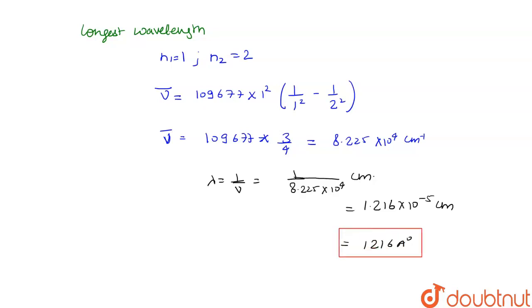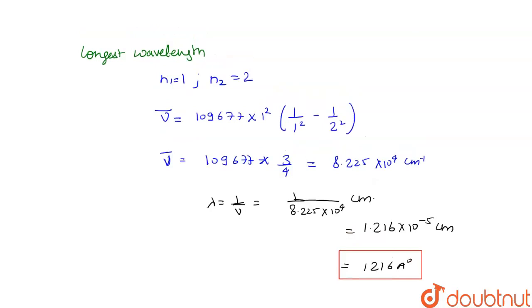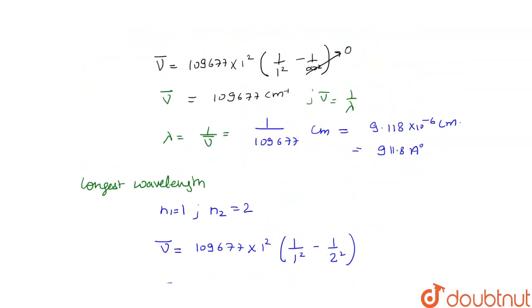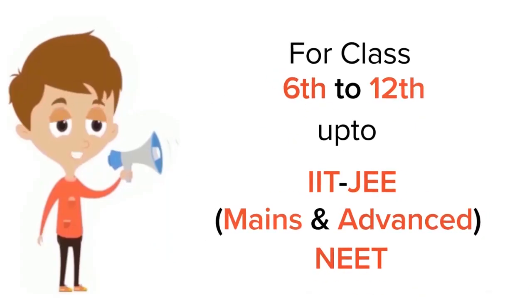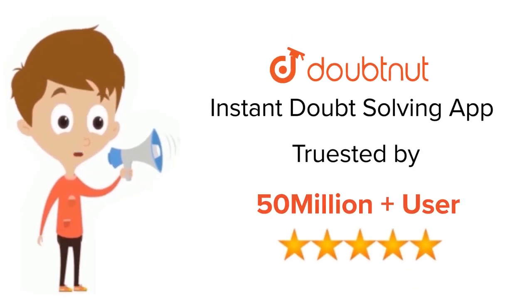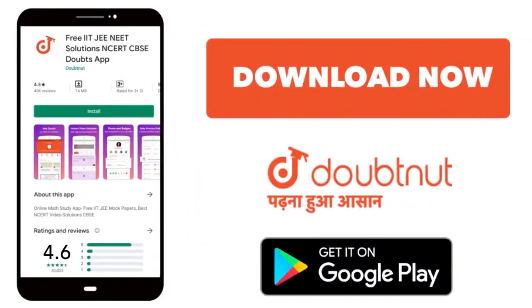This is the longest wavelength required for the Lyman series, and the shortest wavelength is 911.8 Å. Thank you. For class 6 to 12, IIT and NEET level — trusted by more than 5 crore students. Download Doubtnut app today.